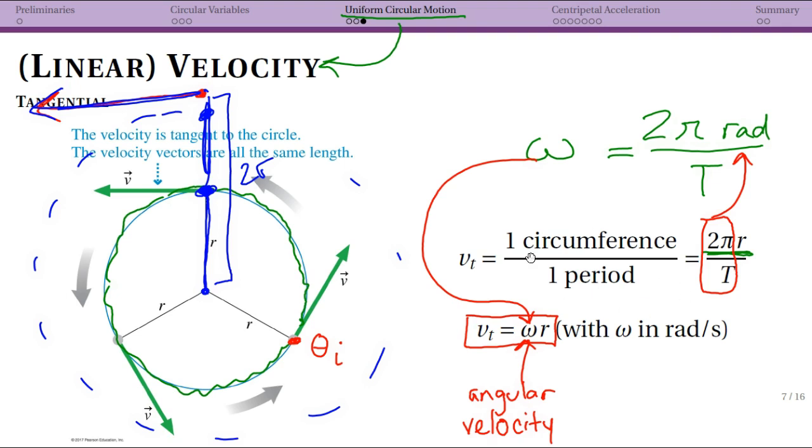That's important to remember. For now, think of tangential velocity as circumference over period, since we can define it that way for uniform circular motion.